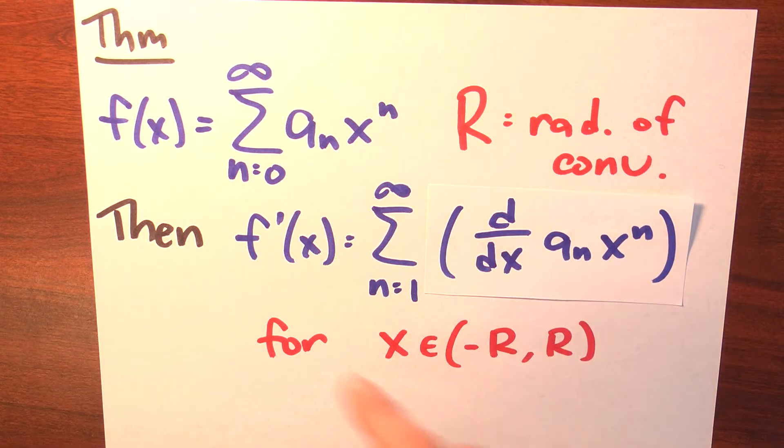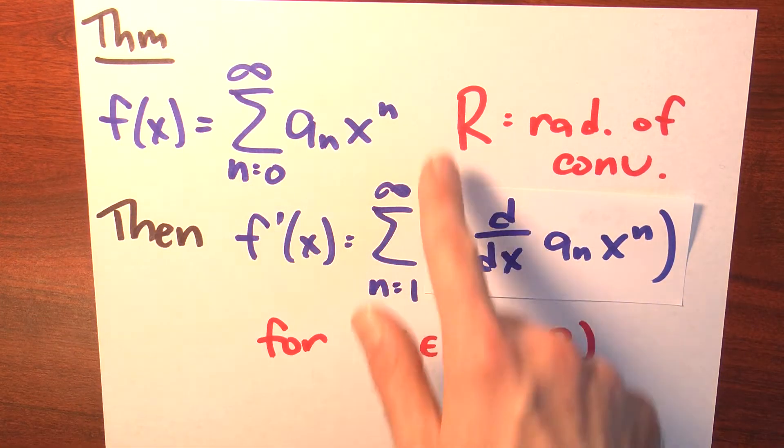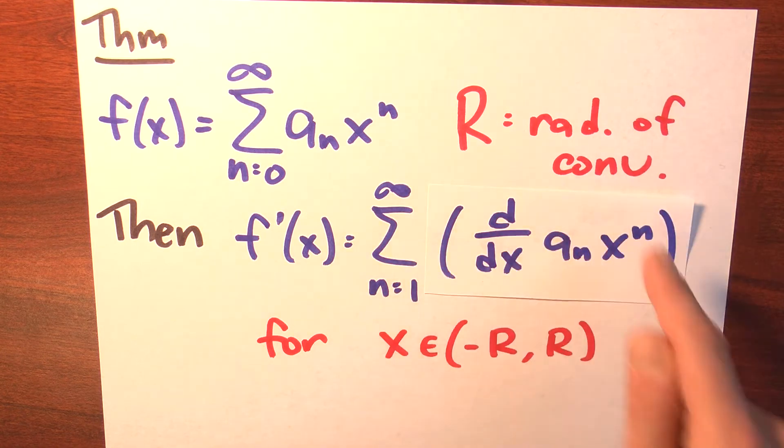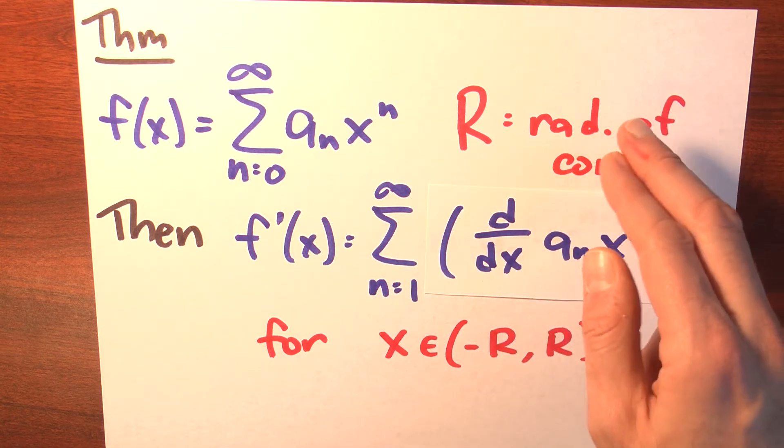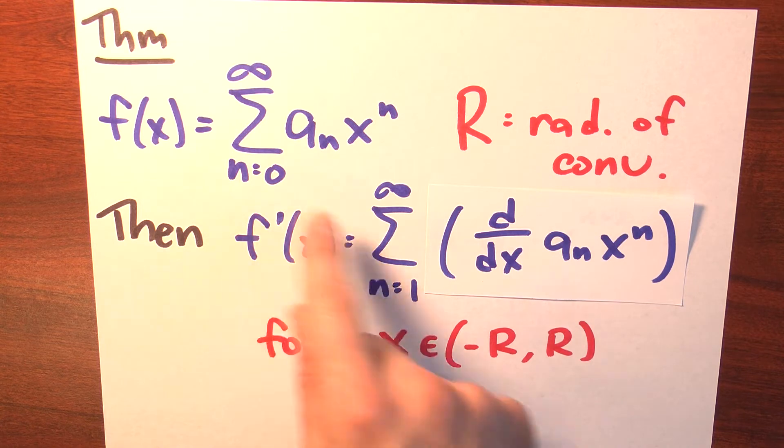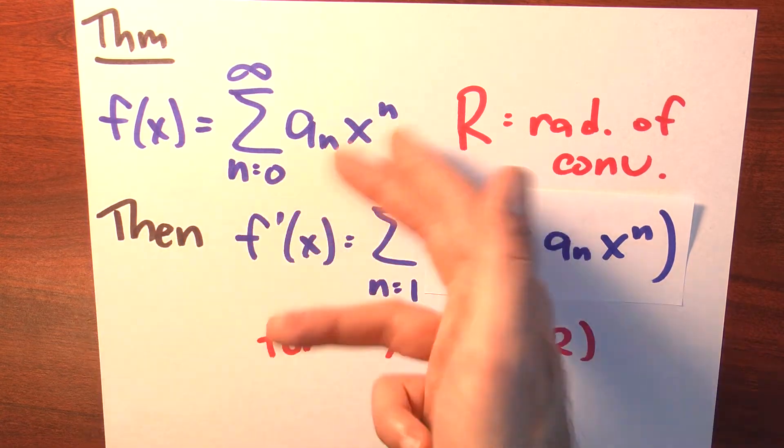So this is telling you that if you want to differentiate a function which is given to you as a power series, well then the derivative is just the sum of the derivatives of the terms of the power series. You can differentiate term by term. This new power series has the same radius of convergence as the old power series. And this power series for any value of x between minus R and R is equal to the derivative of this function which is given to this power series.